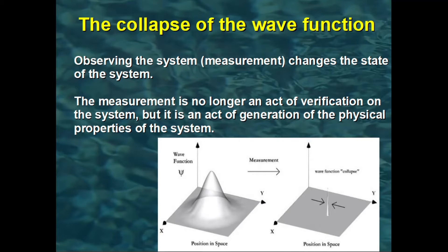This process is called collapse of the wave function. In quantum physics, the properties we observe exist only at the moment of observation, while before it, the same properties are intrinsically indeterminate. The measurement is therefore not an act of verification on the system, but an act of generation of the physical properties of the system.